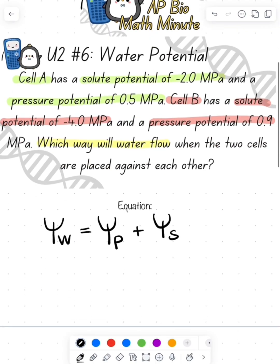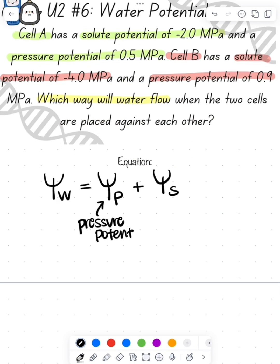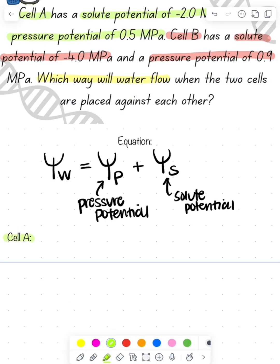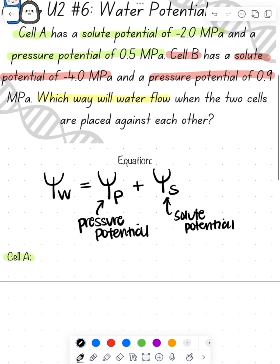First thing, what's the equation? The equation is pressure potential plus solute potential. First we're going to solve for cell A. I always take inventory before I do any of these problems. If you look back at the prompt, you can see that the solute potential is negative 2 megapascals and the pressure potential is 0.5 megapascals.